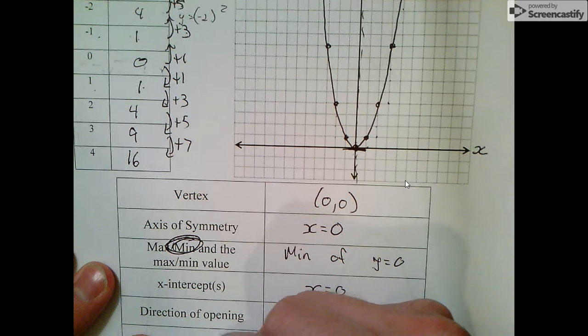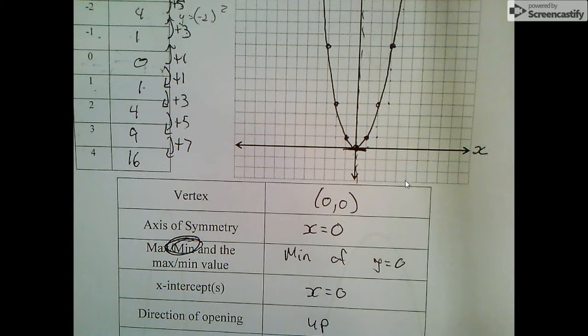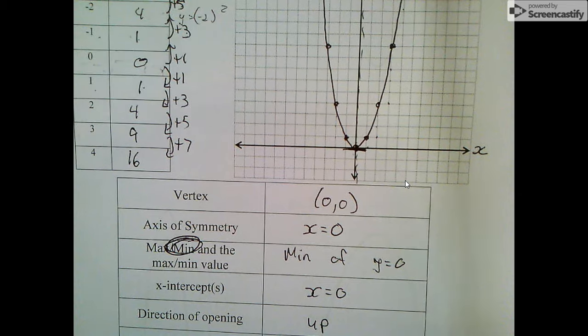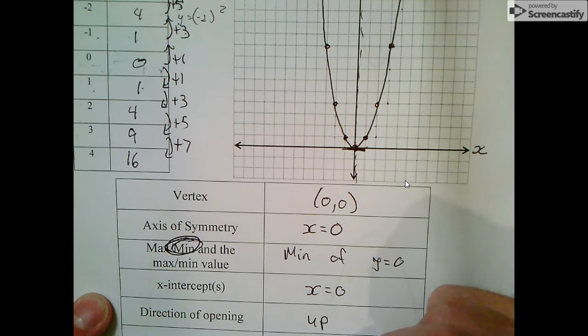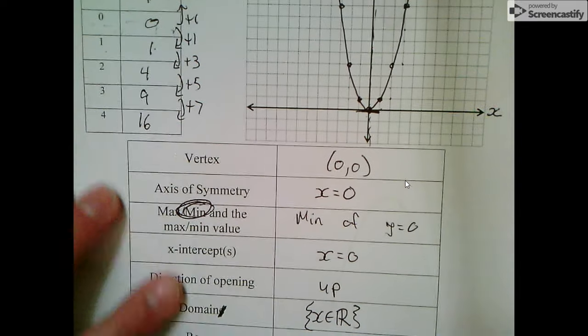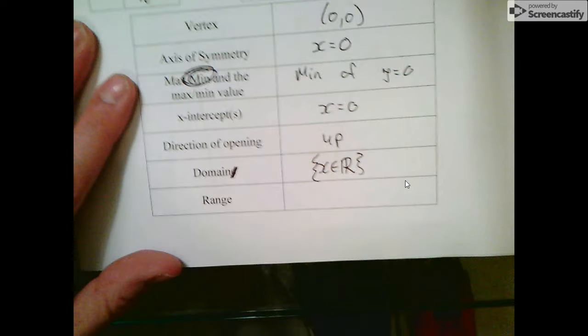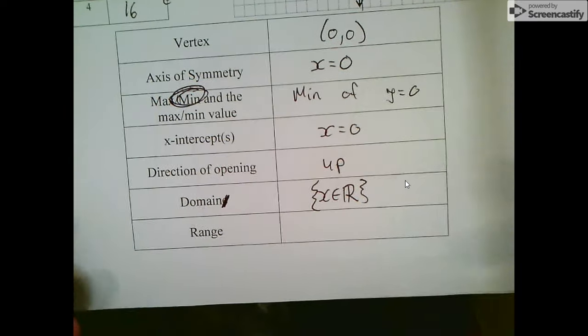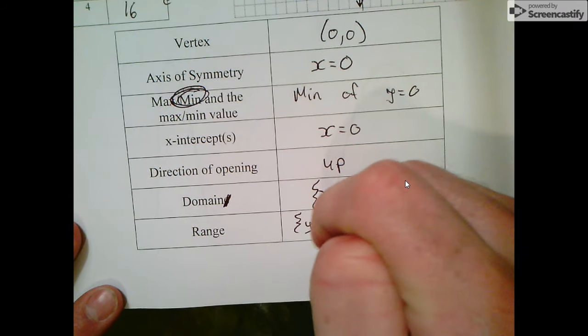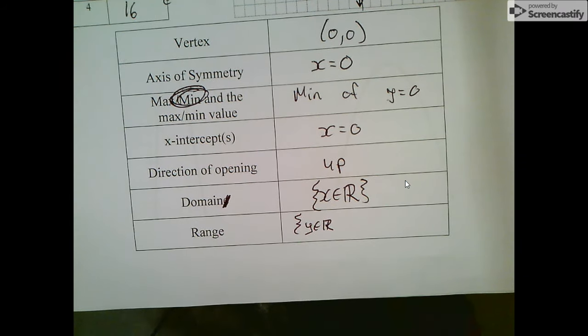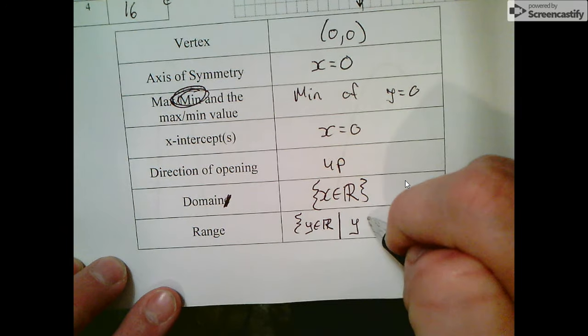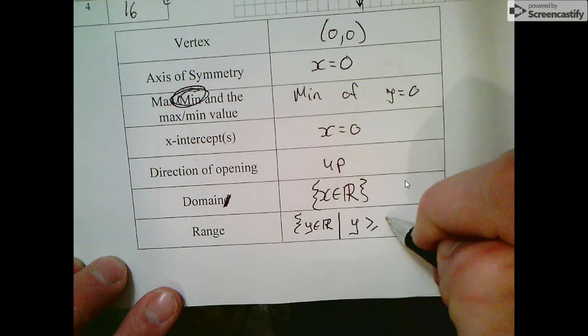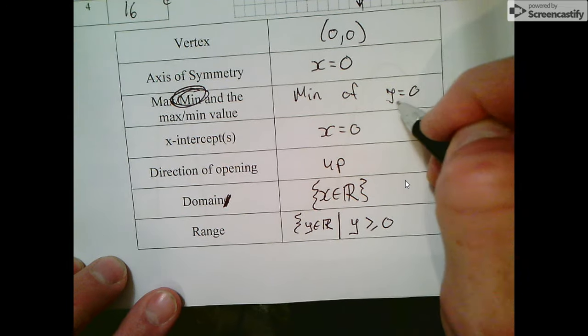The domain is x is a real number in these curly brackets. The range is y is a real number such that y is greater than or equal to 0, that min value we talked about.